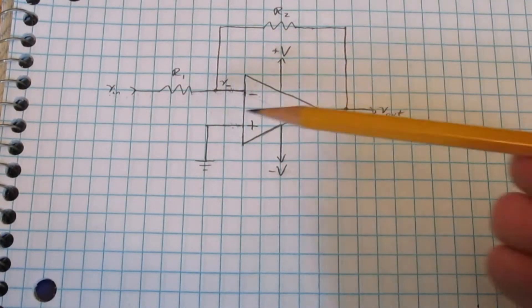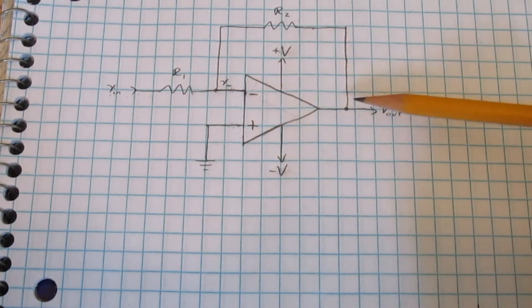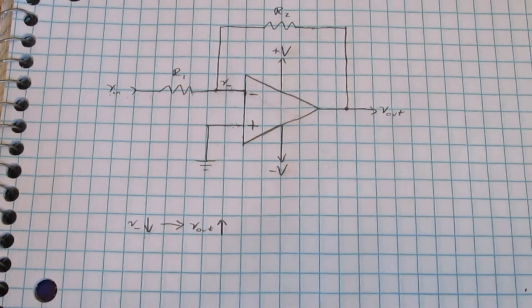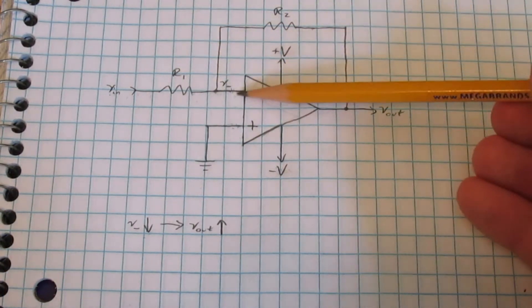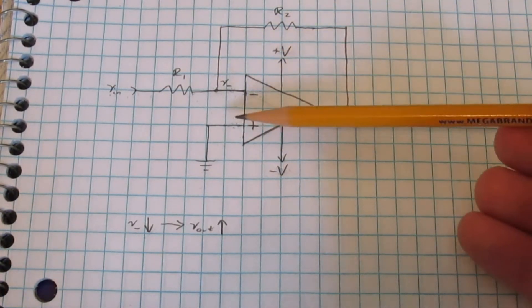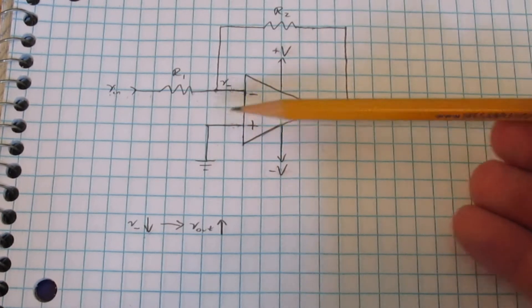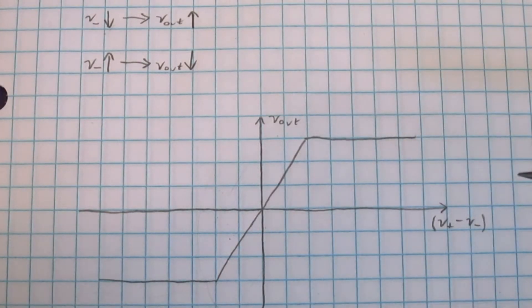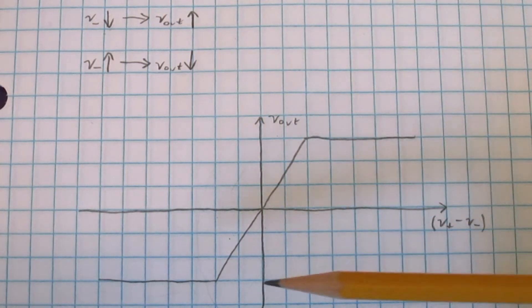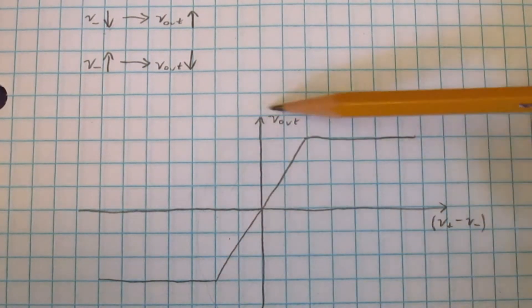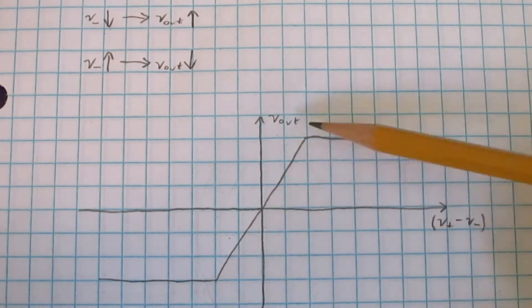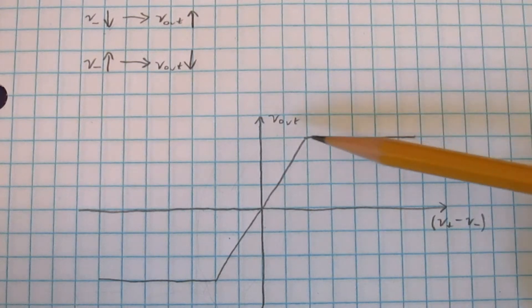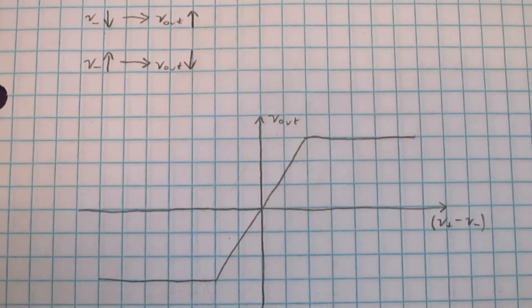If we lower V-minus, that's going to make it smaller compared to V-plus, so the output is going to go up. As V-minus goes down, V-out goes up. And likewise, if V-minus is going up, that's going to make it larger compared to V-plus, which is going to make the output go down. It's important to notice that I'm making an assumption here — the assumption is that we're operating in the active region, where it has a linear slope, and the output is not railed at either the positive or negative supply voltage.